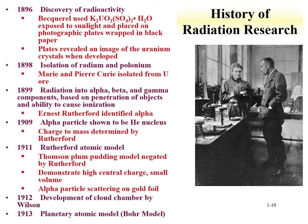Around the turn of the century in 1899, Ernest Rutherford identified the alpha particle. Radiation was divided into alpha, beta, and gamma components based on the ability of these different radiations to penetrate objects — alpha the least, stopped by a small piece of paper; beta a little more, stopped by aluminum foil; and gamma the most difficult to stop. In 1909, the alpha particle was shown by Rutherford to be the helium nucleus, as he determined the charge-to-mass ratio.